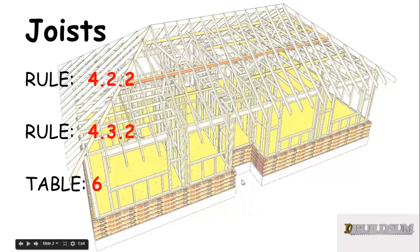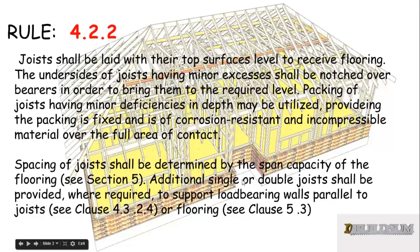Rule 4.2.2 says that joists shall be laid with their top surfaces level to receive flooring. The underside of joists having minor excesses shall be notched over bearers in order to bring them to the required level. Packing of joists having minor deficiencies in depth may be utilized, providing the packing is fixed and is of corrosion-resistant and incompressible material over the full area of contact.